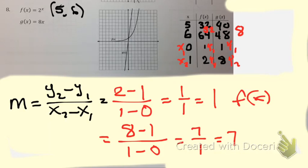So that's 7. So which is the greater rate of change, 1 or 7? 7, so g of x would be the greater rate of change there. That's what we wanted to prove.